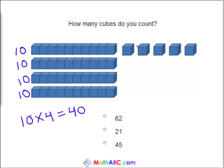And we have 1, 2, 3, 4, 5 cubes more. So 40 plus 5 equals 62, 21, or 45? Yes, it equals 45.